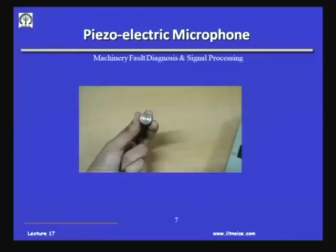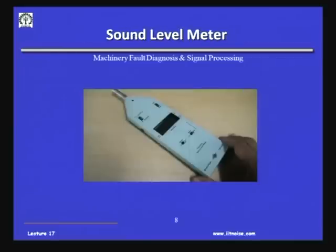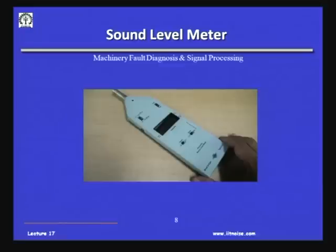Similar to the vibration meter, these microphones are also put in a sound level meter. This is a sound level meter wherein the microphone is only this part, and then we again have a pre-amplifier and a display unit which will give you the overall sound pressure level in a particular frequency range. You have an option of selecting the frequency band and also recording the output. This is a typical sound level meter.